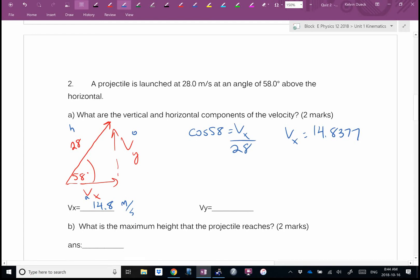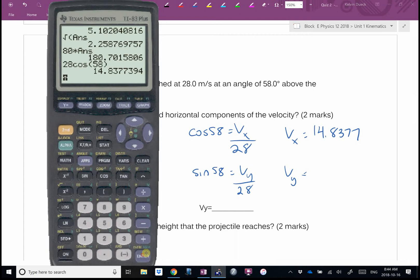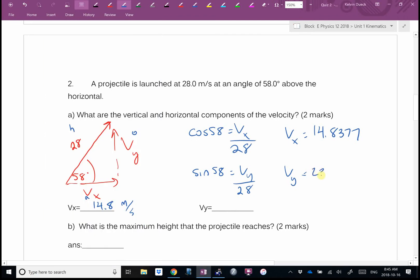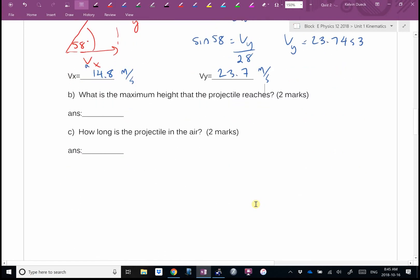Which trig function is Vy going to be? Sine. 28 sin 58, if I write that to three sig figs, 23.7 meters per second. One mark for each of those.